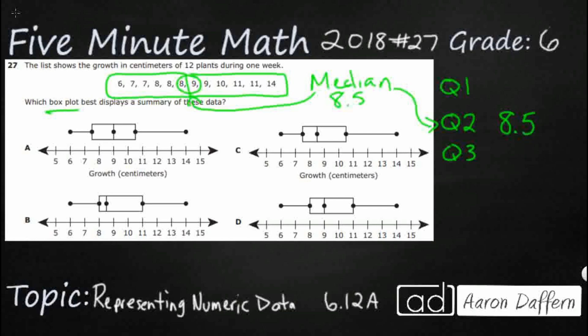Next, we need to find the first and the third quartile. We take our two halves and break each of those halves in half again. We draw a little line between the third and the fourth number, and between the ninth and tenth. Now we've got four quarters, each with three numbers. For Q1, we find the number between 7 and 8, which is going to be 7.5.